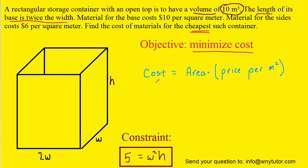Now to minimize cost we have to understand what exactly we mean by cost, how we come up with it in the context of this problem. And it turns out that cost can simply be defined as the area multiplied by the price per meter squared.